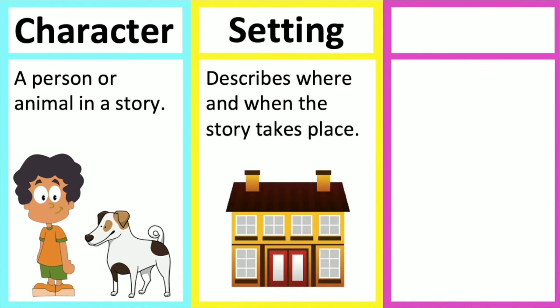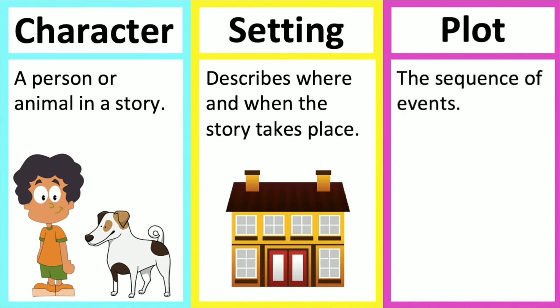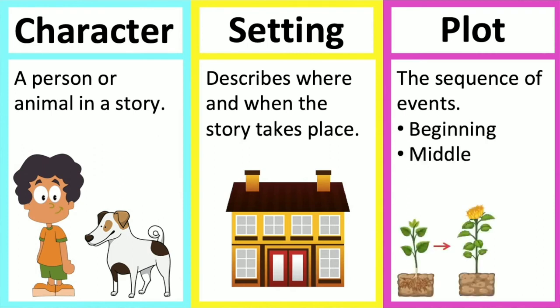The plot is the sequence in which things happen. These are called events. The story is based on the plot. This includes a beginning, middle, and end. The reader can follow the storyline and understand what happens at each stage.